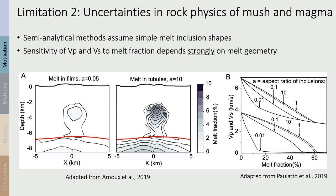To exemplify this, I'm showing results from the Juan de Fuca ridge from Arnoux et al. 2019. It shows that if we choose different melt geometries we can get widely different melt fraction estimates. If we assume we measured a VP of 4.8 kilometers per second, and assume an aspect ratio of inclusions of 0.1, we would get a melt estimate of 23%. But with different aspect ratios we would get melt fractions as low as 9% or as high as 32%.